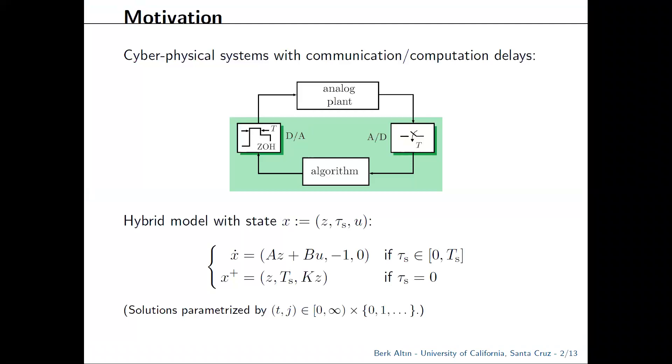Ignoring the possible delays which might occur at any of these interconnections, we can describe the closed loop as a hybrid system. For now, let's focus on the dynamics. We have three state components: a state component z which corresponds to the plant state, a timer variable tau_s which regulates the sampling, and finally a zero-order hold state u which corresponds to our input to the analog plant.